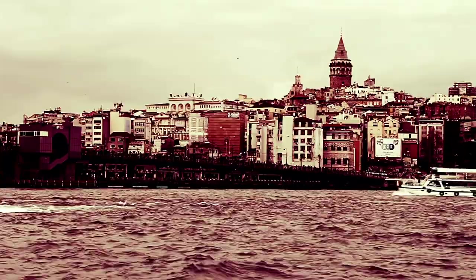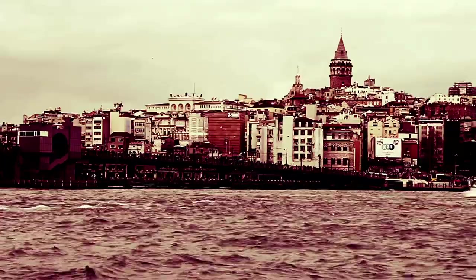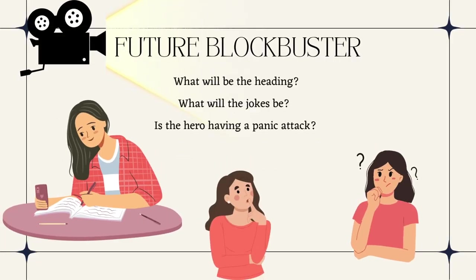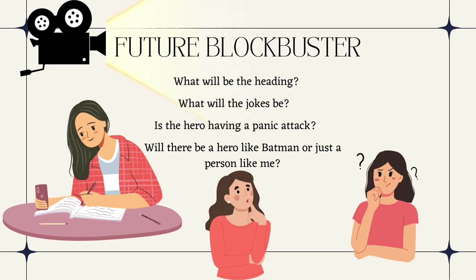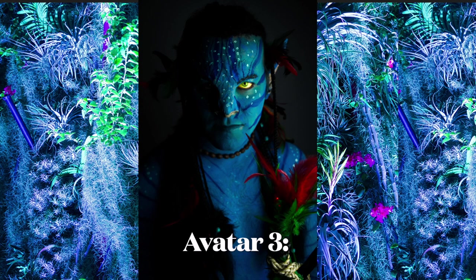So when you sit at your desk with a blank sheet of paper staring at you, waiting to witness a future blockbuster, does your mind go blank? Suddenly you are spiraling down thinking: what will the headline be? What will the jokes be? Will it start in a cafe? Will there be a hero like Batman or just a person like me? Oh god, this is a full-blown mess. Not for today — I will write a blockbuster some other day. Avatar 3 can wait. It's exhausting, I know, but don't worry. In this video we give you a guide on how to get around a script.